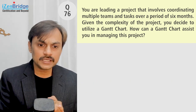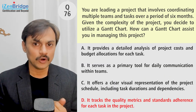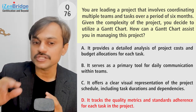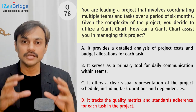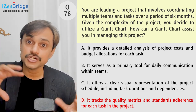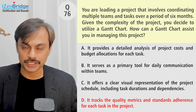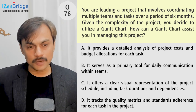Option D: it tracks the quality metrics and standard adherence for each task in the project. The utility of a Gantt chart is not for tracking quality metrics. The utility of a Gantt chart is basically looking at the relationship between activities and sequencing them so we can see how our critical path overall looks.